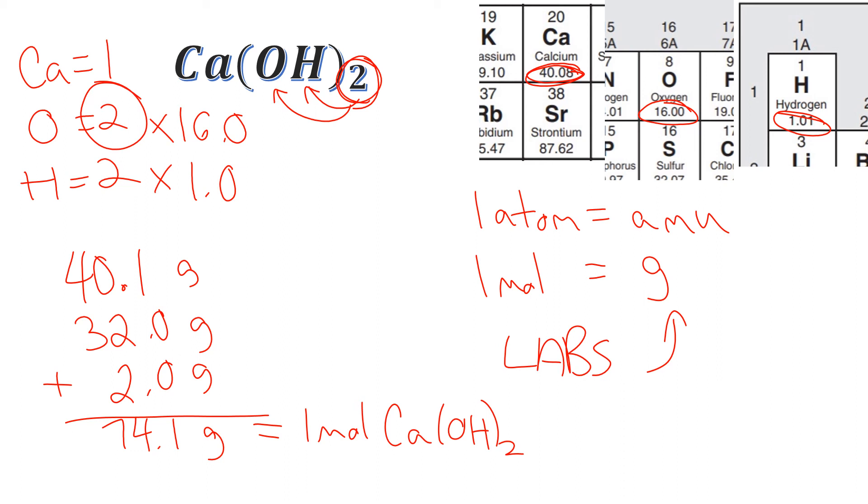If I have 74.1 grams of calcium hydroxide, that means I have 6.02 times 10 to the 23rd formula units of it. What I mean by that is, this is ionic. Remember, ionic compounds form crystal structures, metal with non-metals.